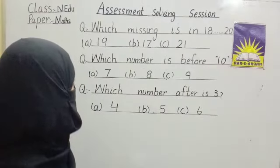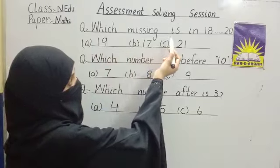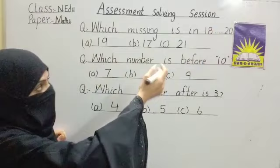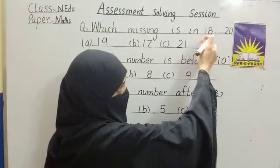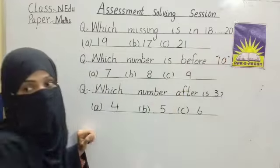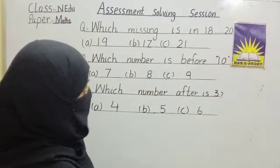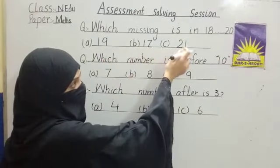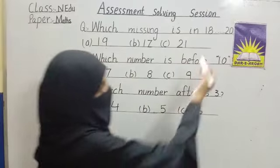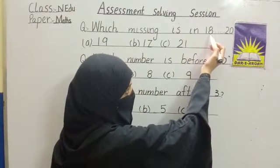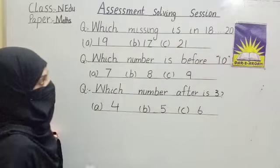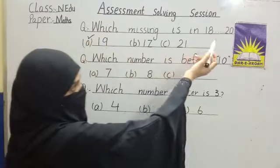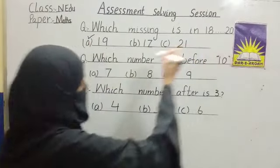Next question: which number is missing between 18 and 20? Option A: 19. Option B: 17. Option C: 21. Count: 18, 19, 20. Yes, very good — 19. Tick option A.